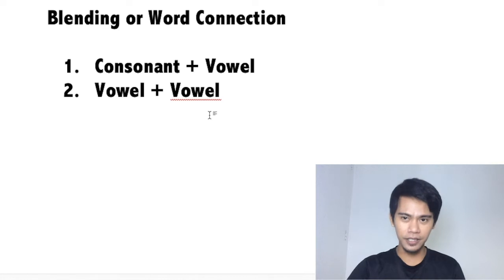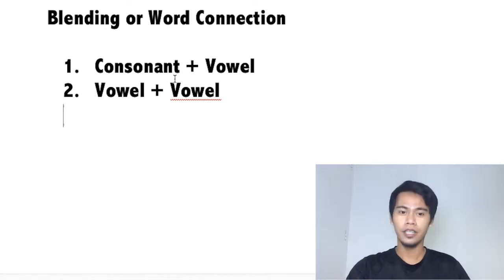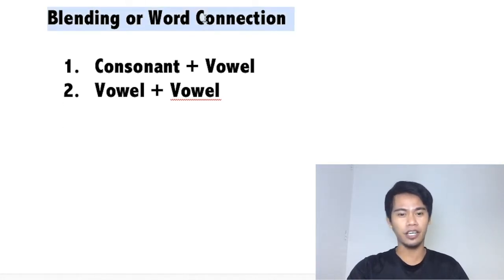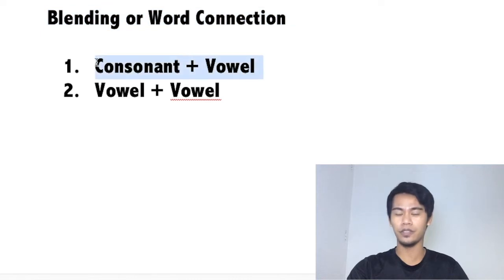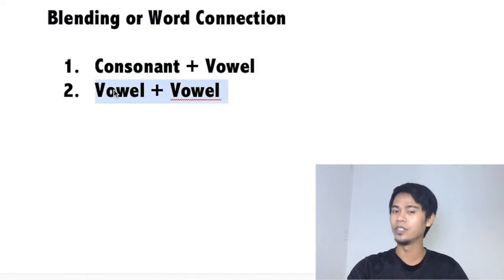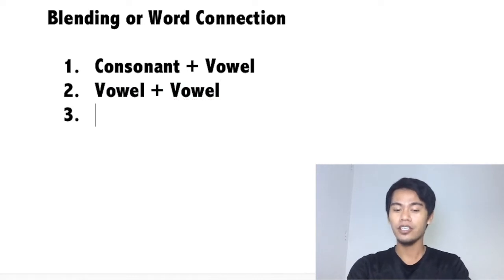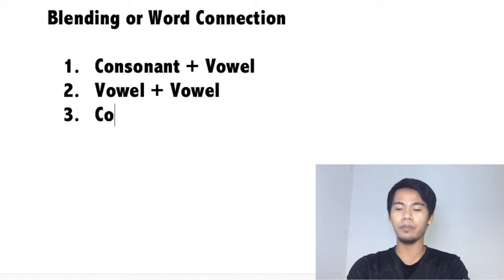Alright, let's begin. Under your blending and word connection, we already finished consonant plus vowel, and then vowel plus vowel. Now the third rule that we're going to talk about would be consonant plus consonant.